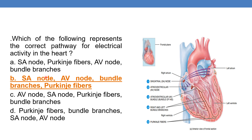The answer is option B. First, the Sino-Atrial node, next the AV node, next bundle branches, and next Purkinje fibers. This is the numbered order of the pathway.